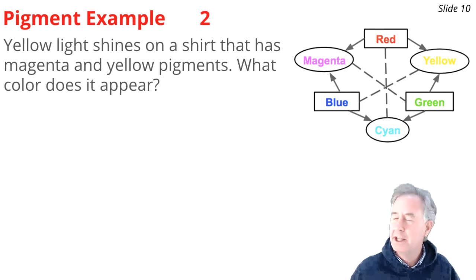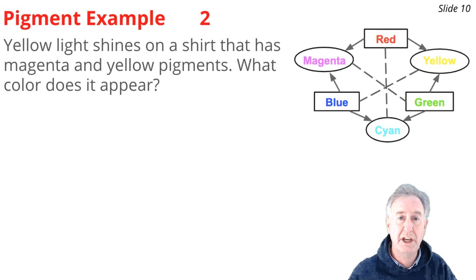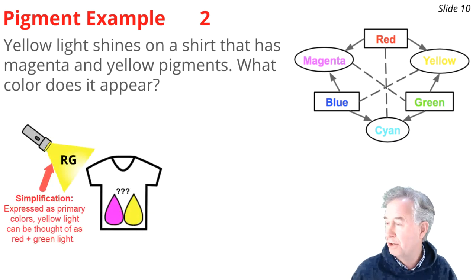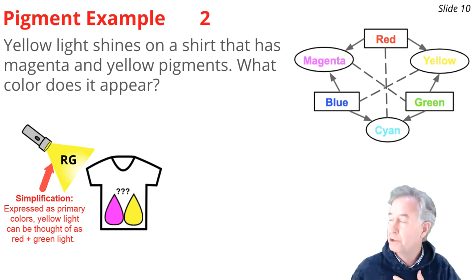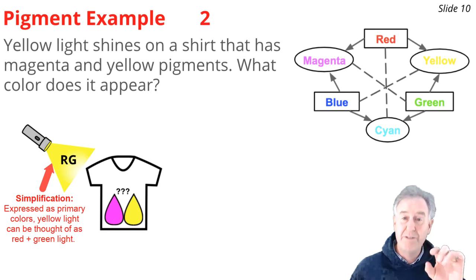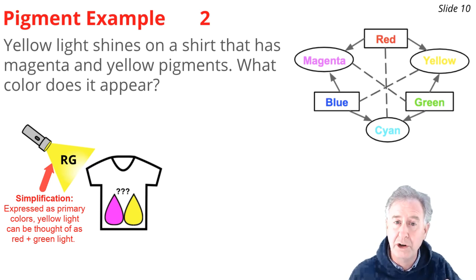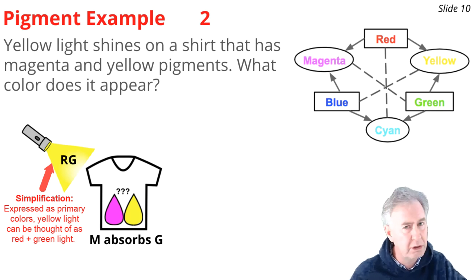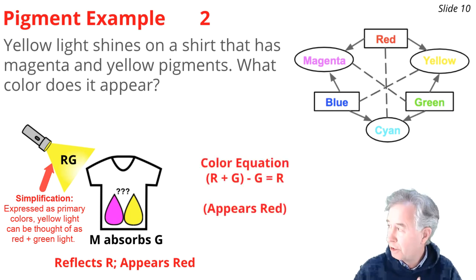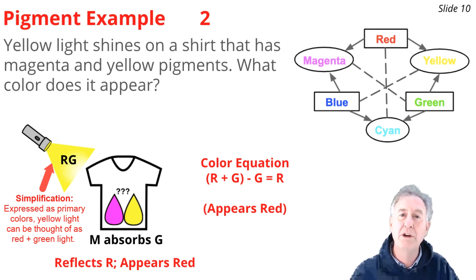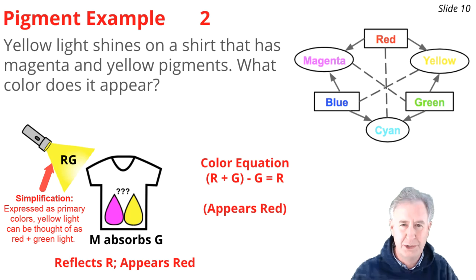Example two: yellow light shines on a shirt with magenta and yellow pigments. Yellow light is red + green. The magenta pigment absorbs green — so green is subtracted. The yellow pigment would absorb blue, but there's no blue light present, so it doesn't factor in. Red reflects to your eye and the shirt looks red. Color equation: (R + G) − G = R. The shirt appears red.